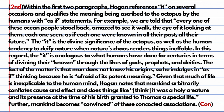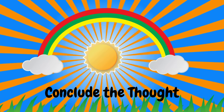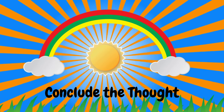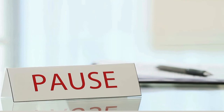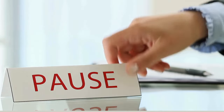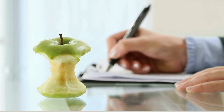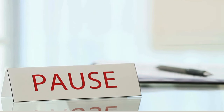Now I've got to get back to the thesis and the prompt. Let's conclude this thought. 'As existential as it may sound, the causal relationships in the passage and the syntactical arrangements make one thing clear: most of the meaning humans ascribe to higher powers is meaningless and arbitrary. As Freud said, sometimes a cigar is just a cigar.' Conclusions usually take one or two sentences. Students, pause here, try your hand at multitasking — write the first premise, go quote hunting, embed with the five-word rule, and slam a tagging conclusion on that body paragraph. All 10 to 12 sentences. Peer edit and get feedback.